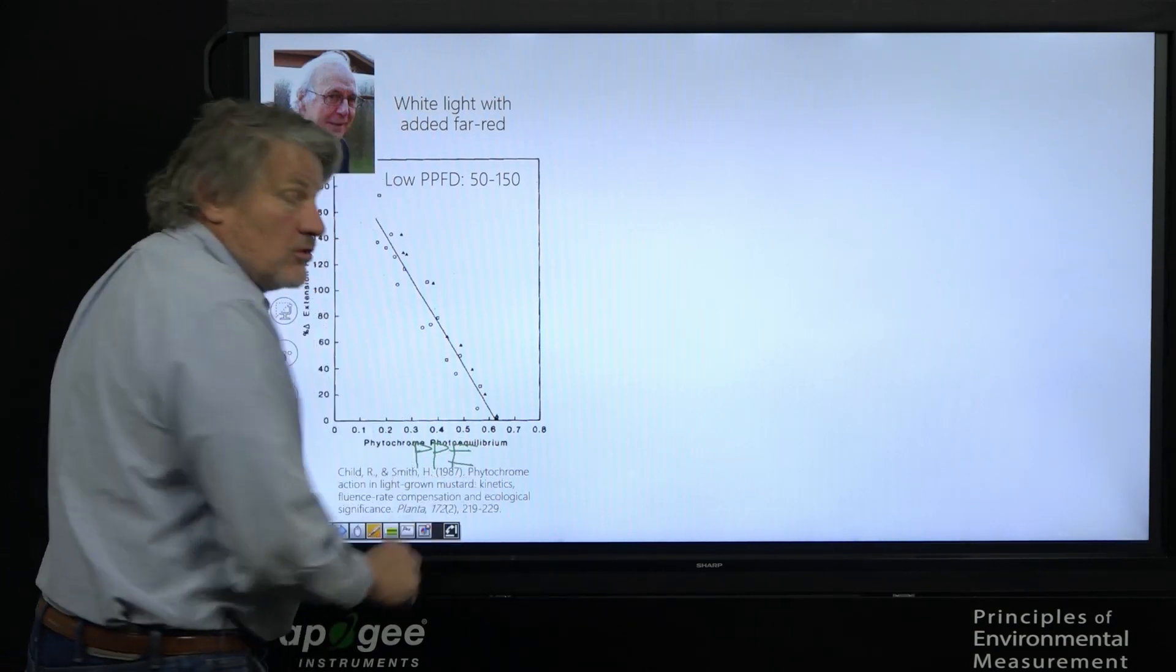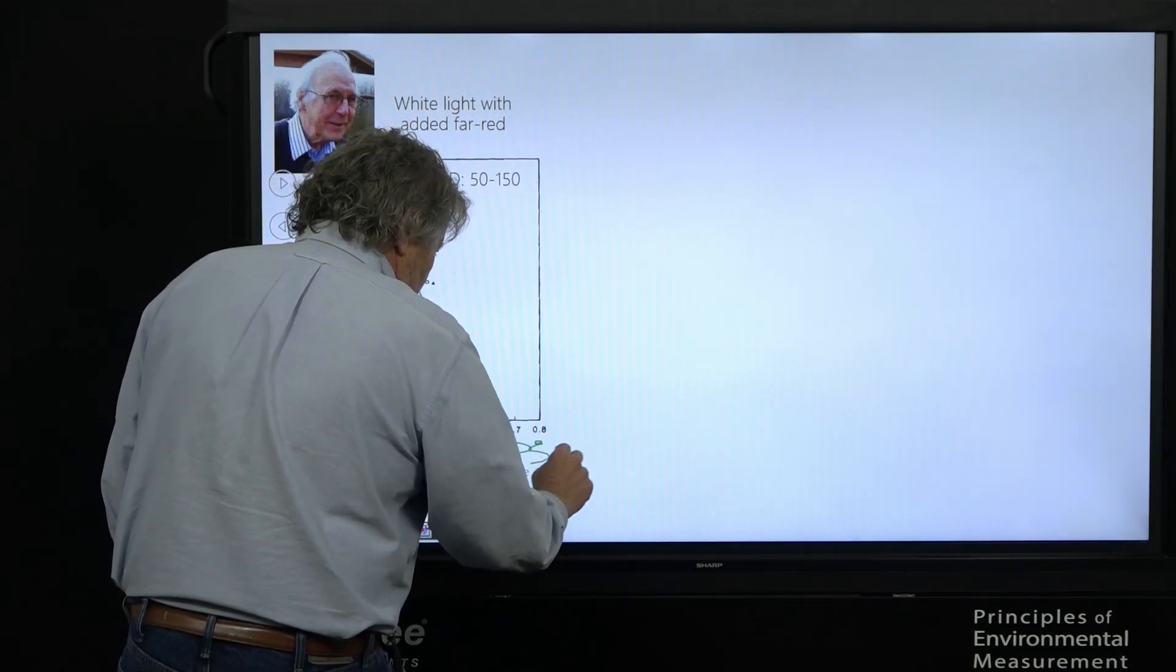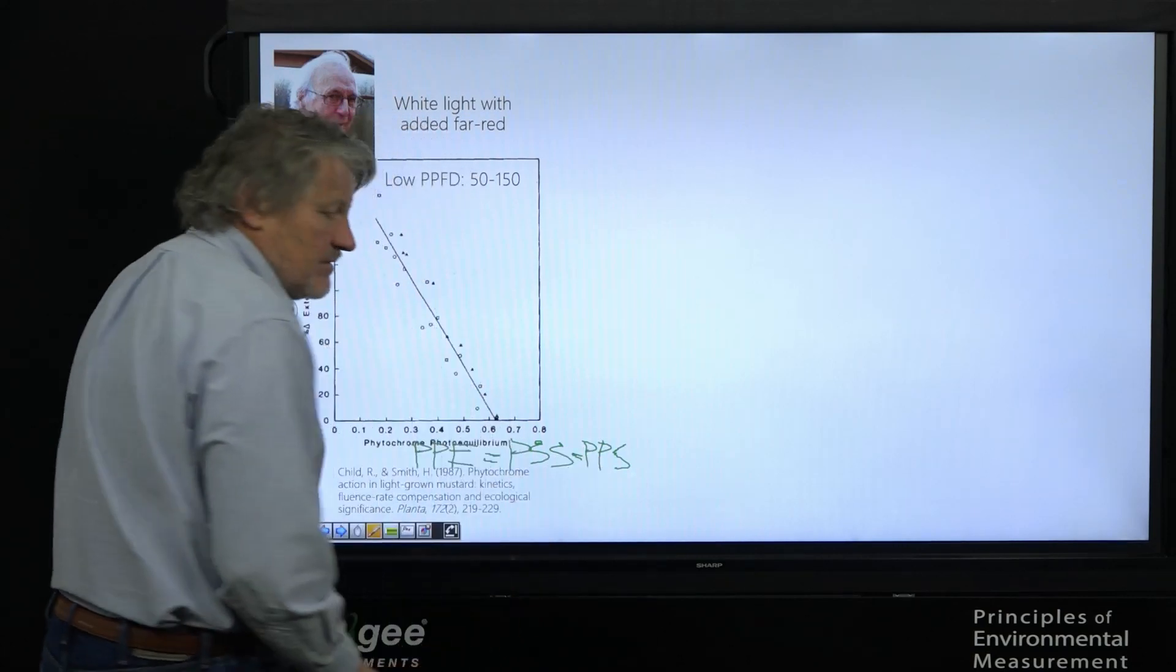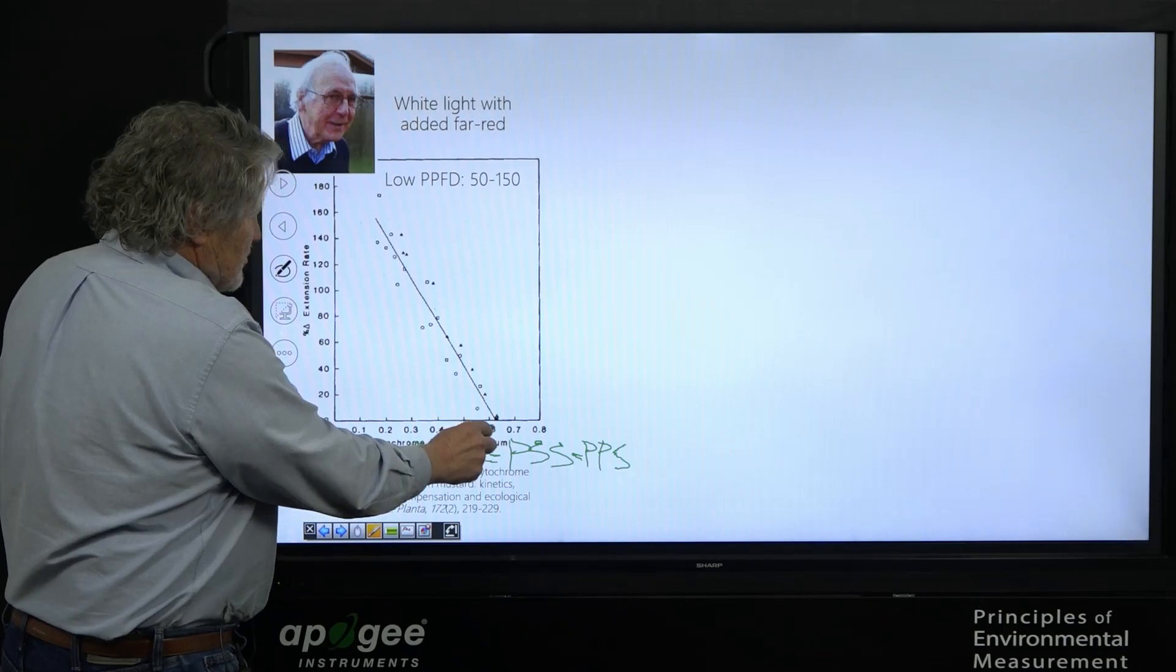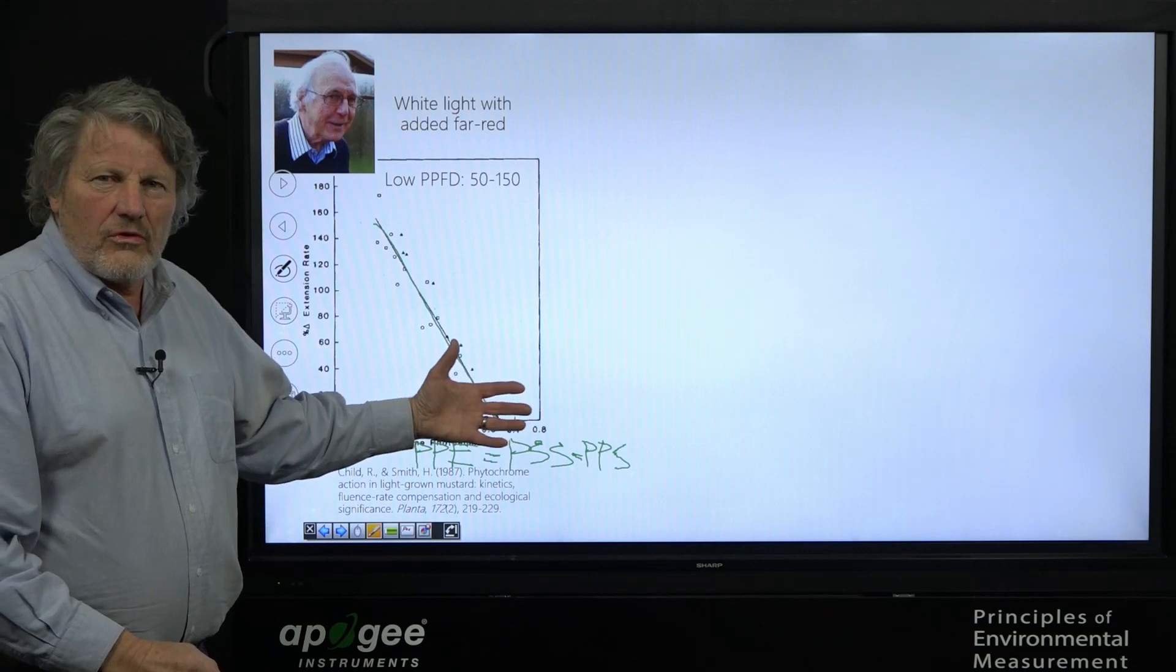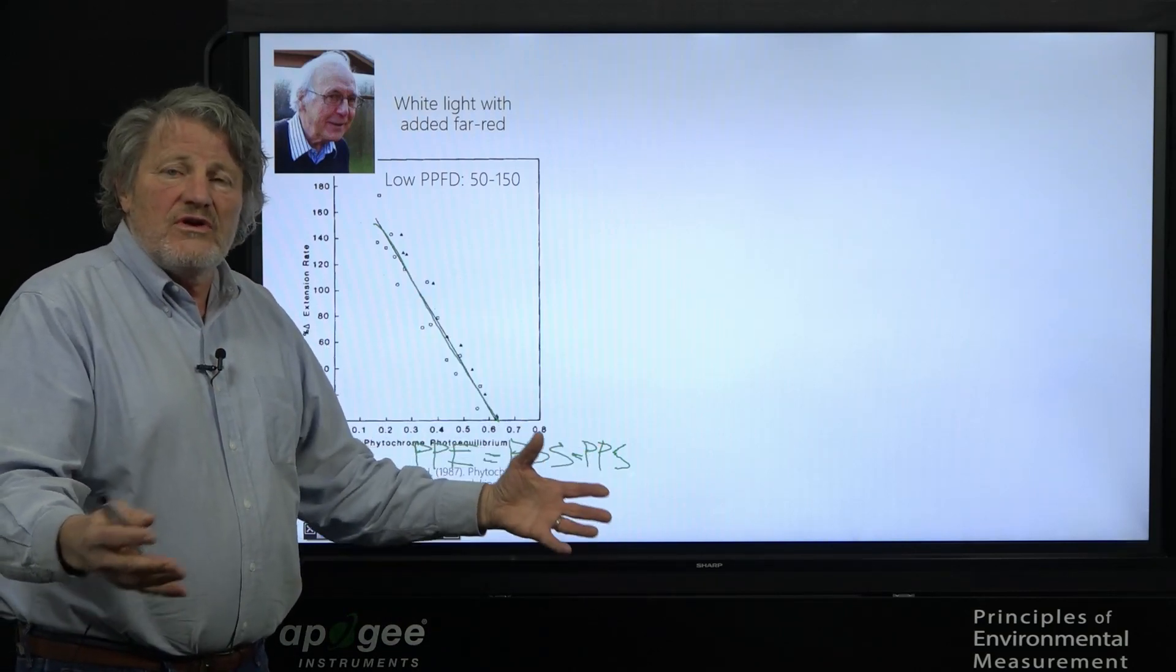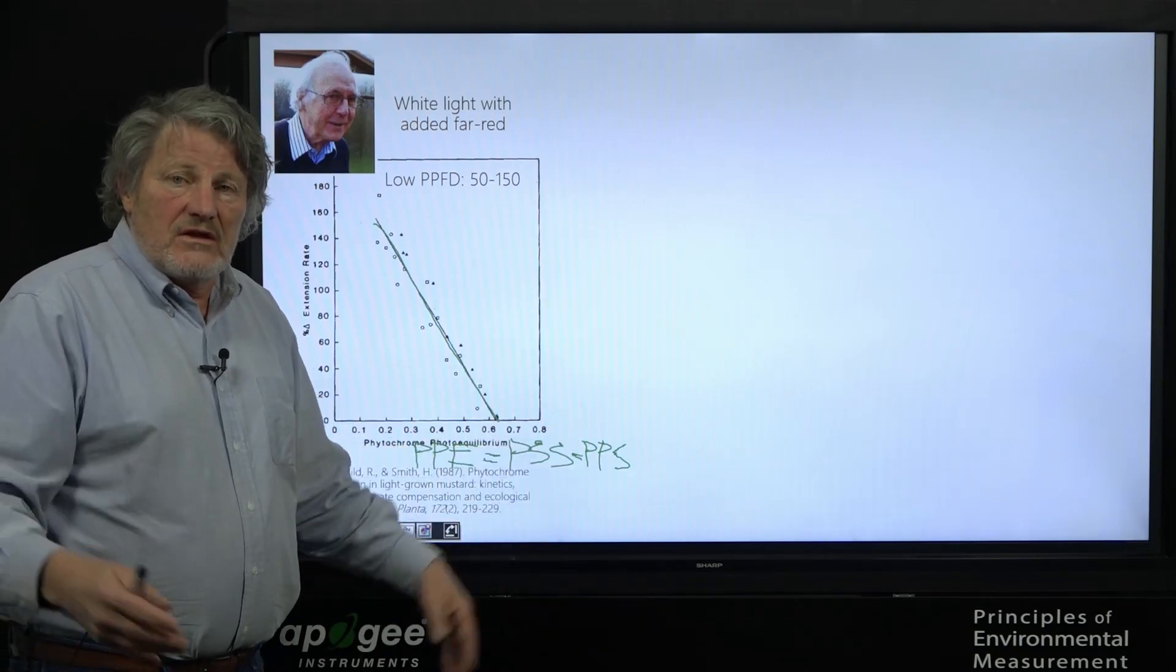By the way, this is also called phytochrome photostationary state, PSS or PPS. There's a couple different acronyms. They all mean the same thing. Here's his results. He grew plants in sun and shade, and look at how linear this line is. A wonderful predictor of stem extension rate. It's beautiful. Building on this, we've used this now for many years to predict stem elongation and leaf expansion.